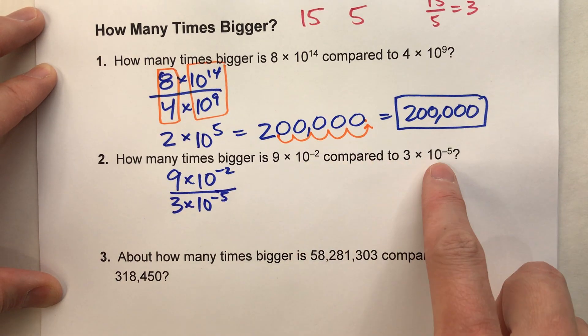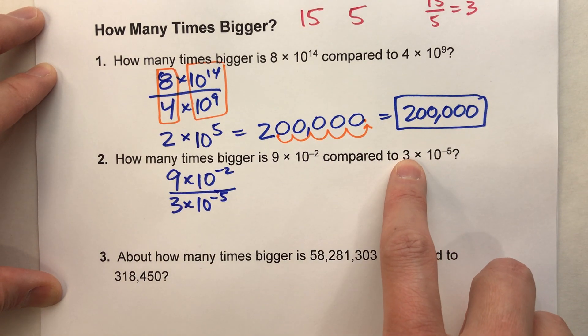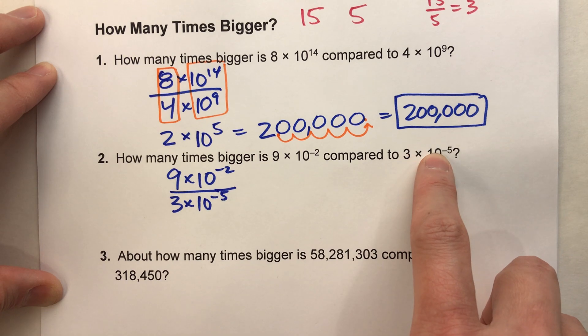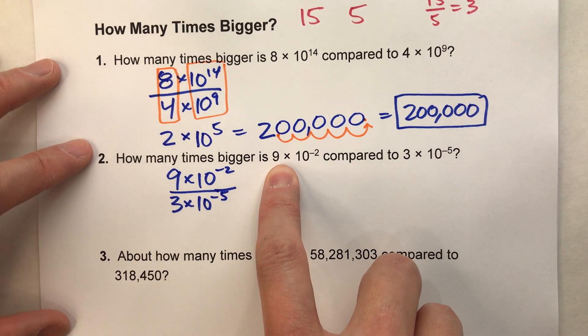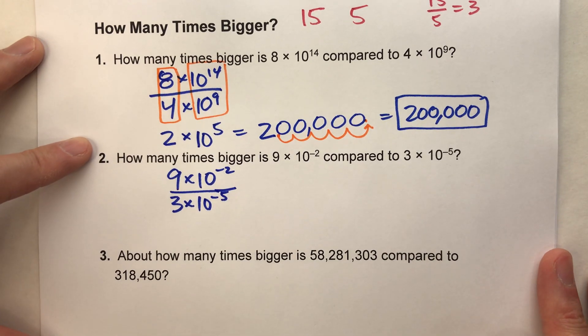These are negative exponents. That means it's basically dividing by 10 five times, and this one's only dividing by 10 twice. So this one's actually a bigger number. But let's go through this.